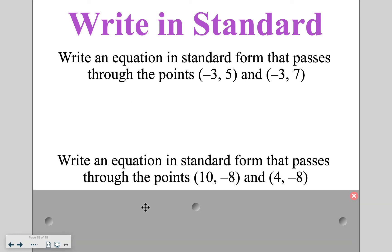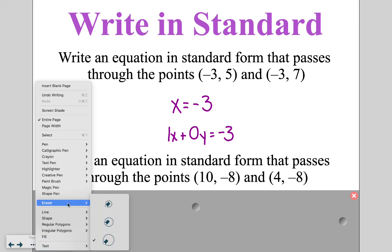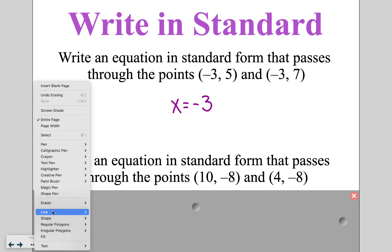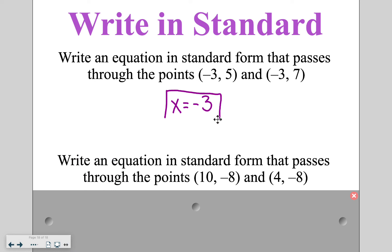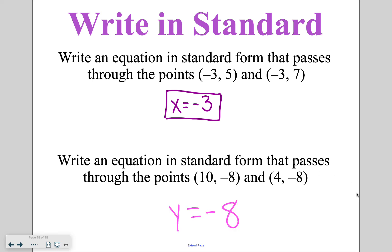The other piece when writing standard form is vertical and horizontal lines. If both points have the same x value — like negative 3, 5 and negative 3, 7 — the equation in standard form is x equals negative 3. You could write it as 1x plus 0y equals negative 3, but simplified it's just x equals negative 3 since the x value is not changing. Go ahead and try the next one on your own. In the second example, y equals negative 8 because the y value is staying consistent. If you have questions about this or anything from the lesson, please feel free to reach out.